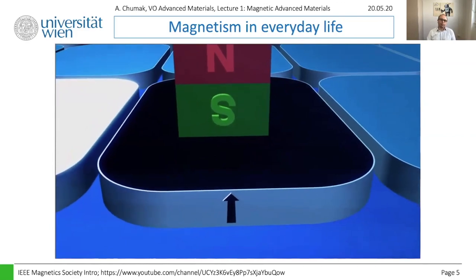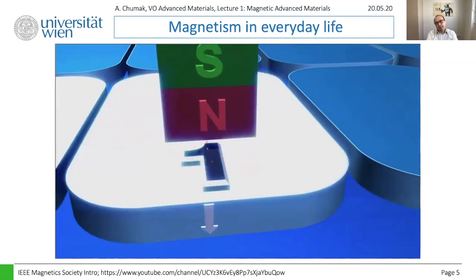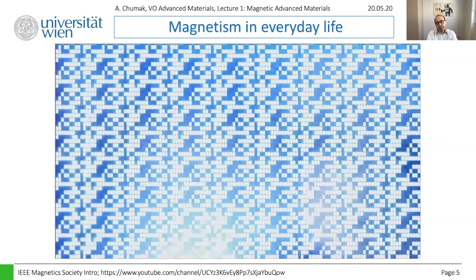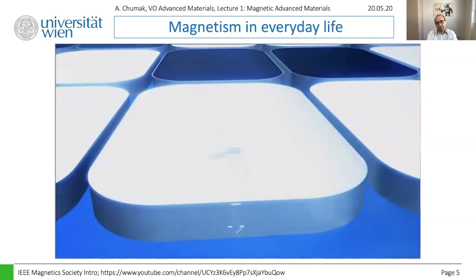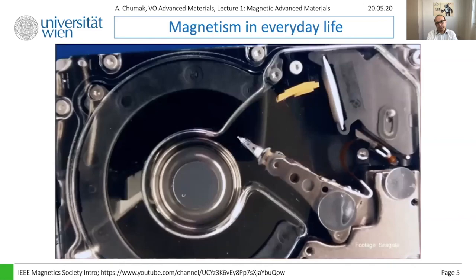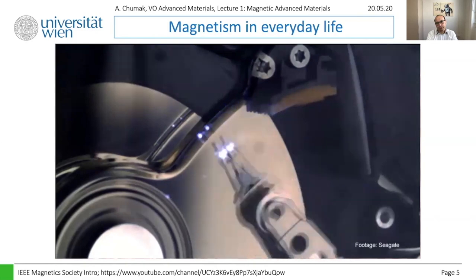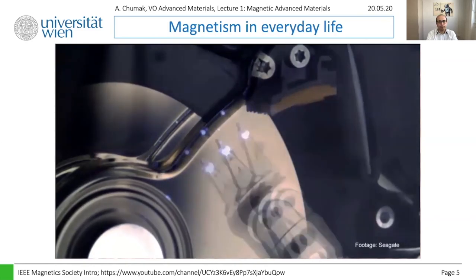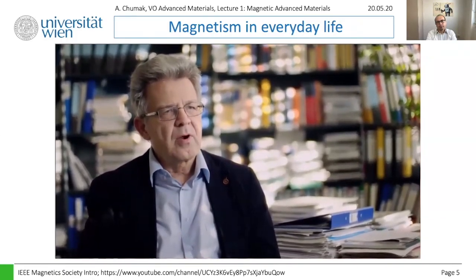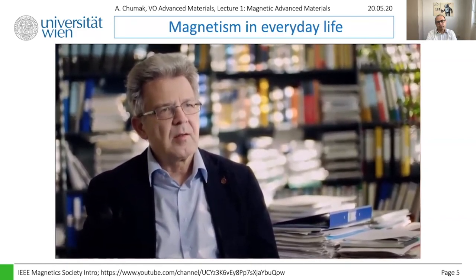If the domain is magnetized in one direction it's a logic zero; in the other direction it's a logic one. With billions of such domains we can store any information, such as a movie. The question is how to switch the magnetization from one direction to another. The latest generation of hard disks — so-called HAMR systems — use short laser pulses in the presence of a weak magnetic field to do the job. But can we do it even faster?